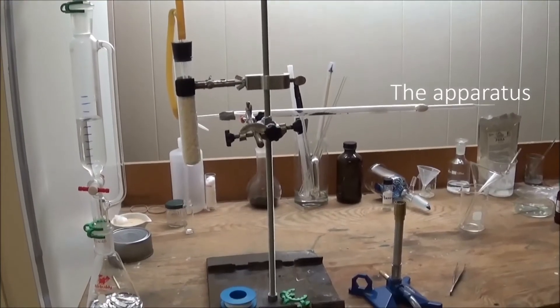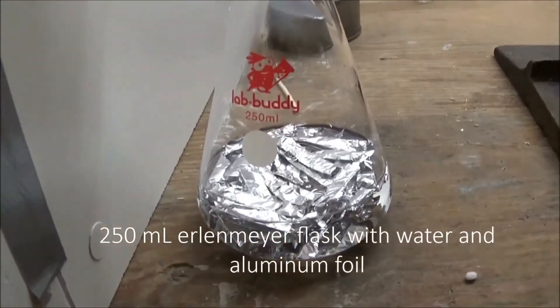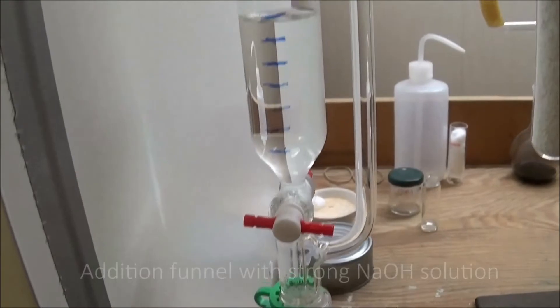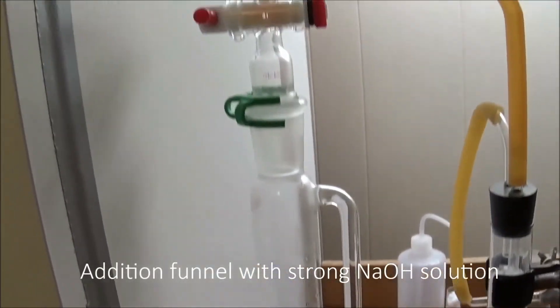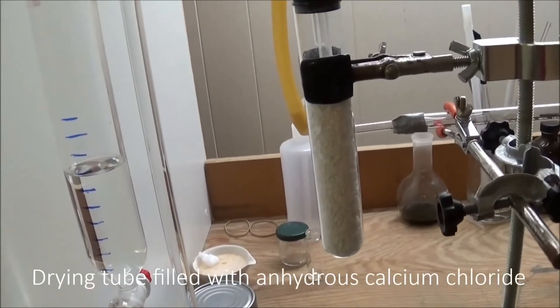First, I'll show you my apparatus. It starts with a 250 milliliter flask with aluminum and water. Above it is an addition funnel with sodium hydroxide solution. This leads to a calcium chloride drying tube.